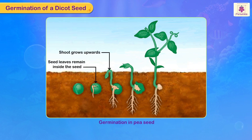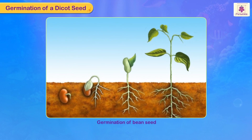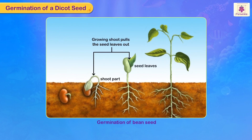Once the stored food supply is over, the seed leaves dry out. In germination of a bean seed, the growing shoot pulls the seed leaves out of the seed coat and above the soil. These seed leaves are the first leaves for these plants.